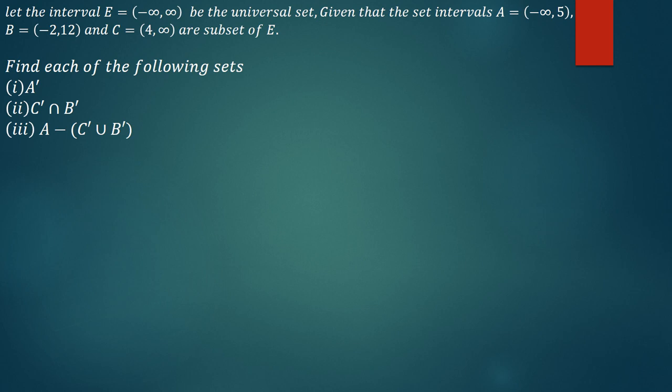The question says: let the interval E be equal to negative infinity to positive infinity, and E is the universal set. Given that the set intervals A equals negative infinity to 5, B equals negative 2 to 12, and C equals 4 to positive infinity are subsets of E.